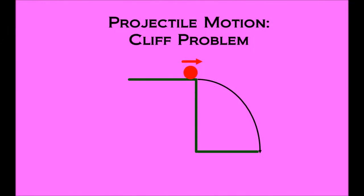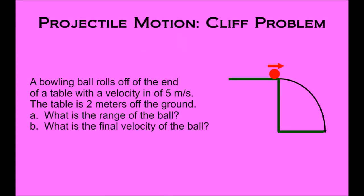This video is going to focus on projectile motion, and in particular, a classic physics type problem called a cliff problem. The way the problem reads is as follows: a bowling ball rolls off the end of a table with a velocity of 5 meters per second. The table is 2 meters off the ground. As the ball falls to the ground, we want to know A, what is the range of the ball, and B, what is the final velocity of the ball.